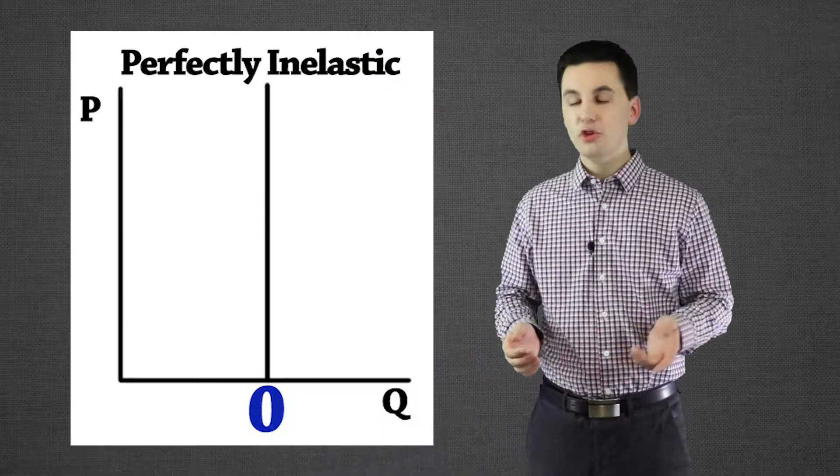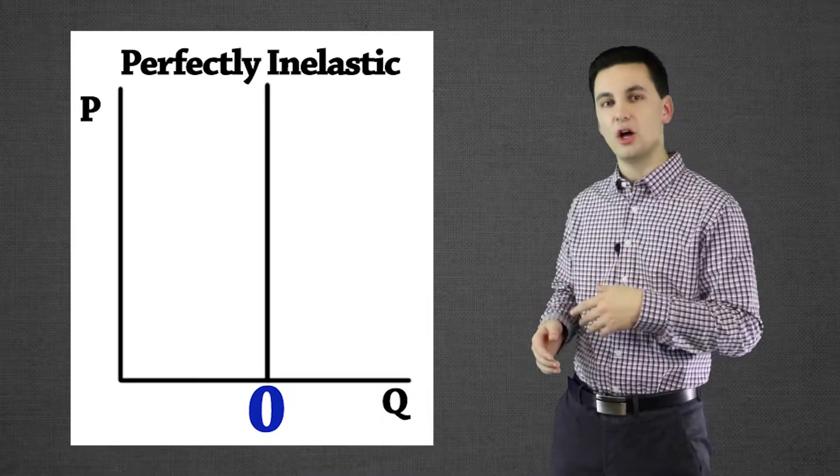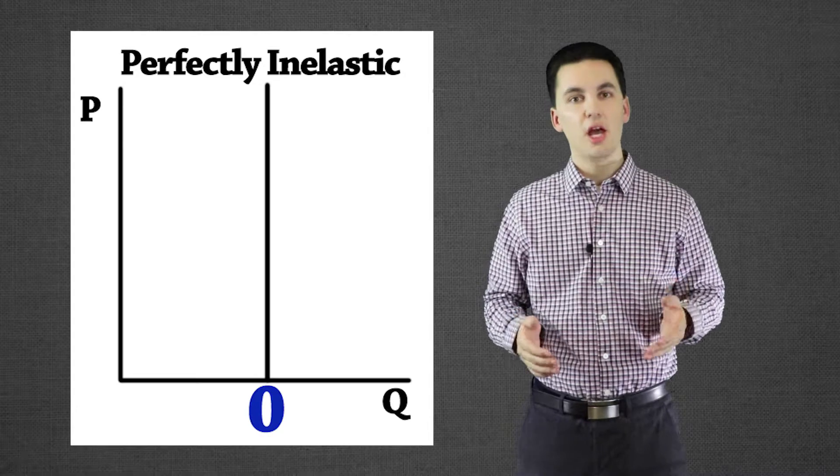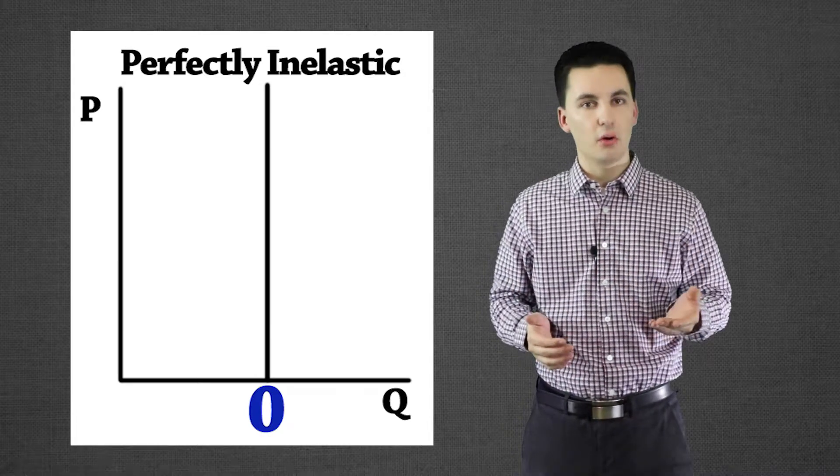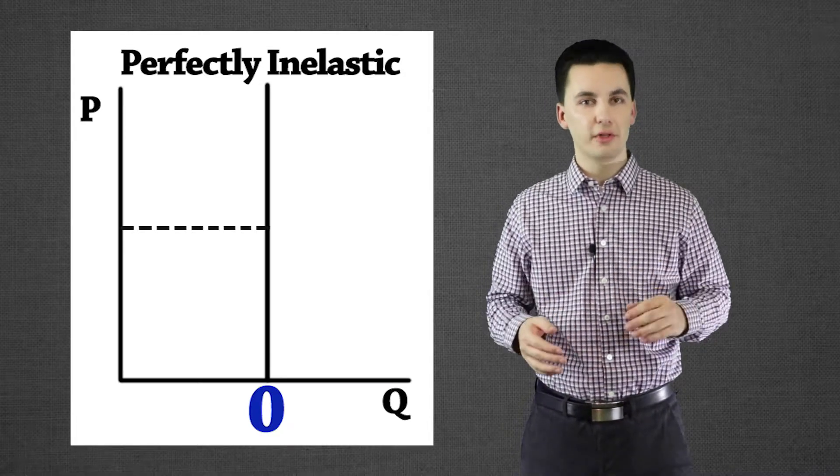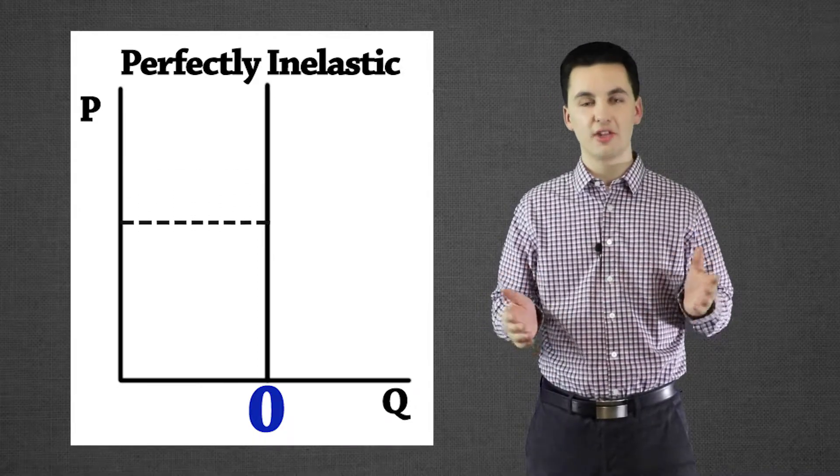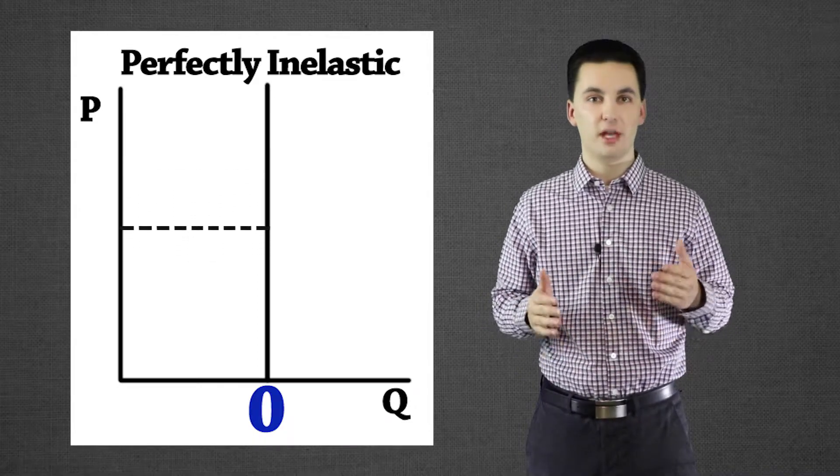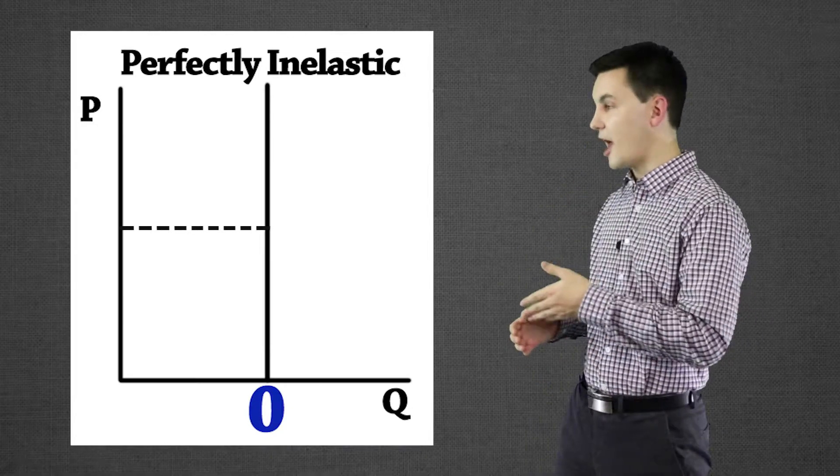We've gone over what it means when our demand or supply coefficient is above one, under one and one. But what if it's at zero? You can see on the chart right here this is an example of perfectly inelastic. This would be an example if we ever got a zero. What we're going to see is there isn't a relationship. Doesn't matter what I charge my price, people are going to buy the same amount.